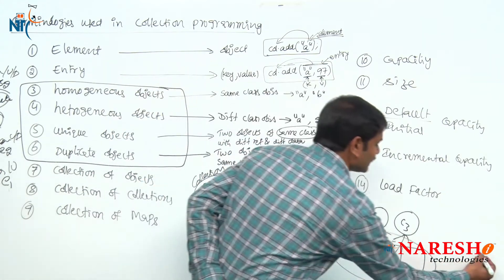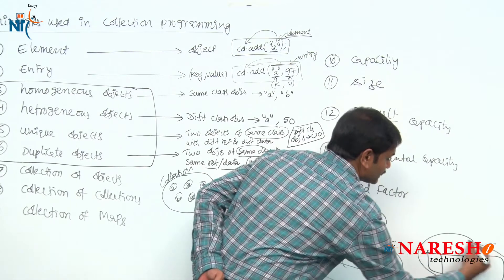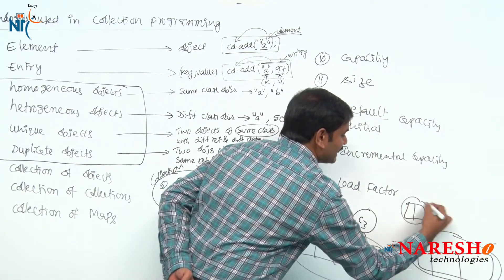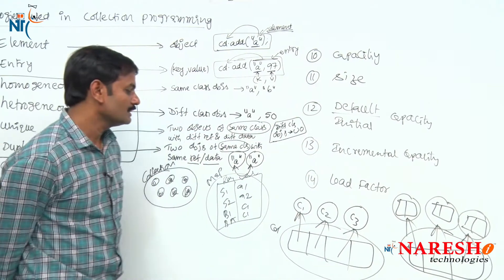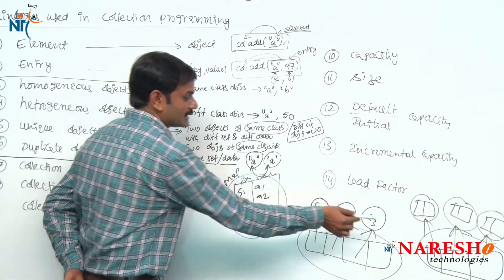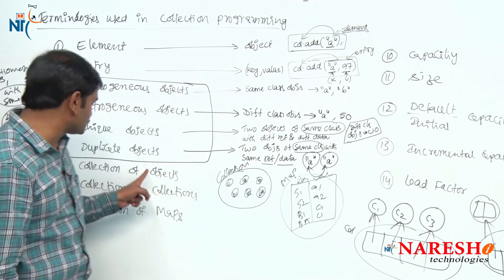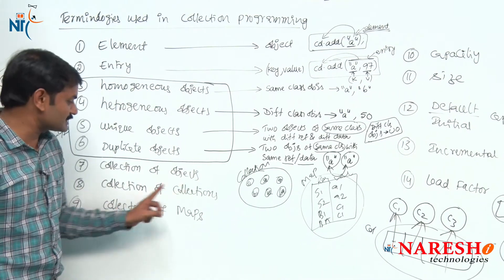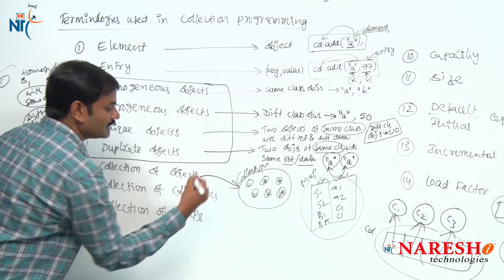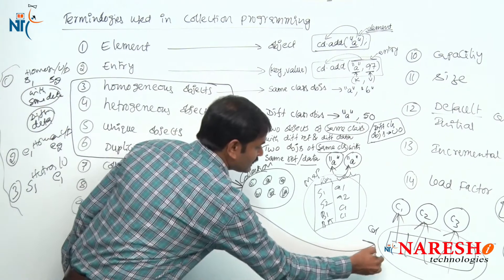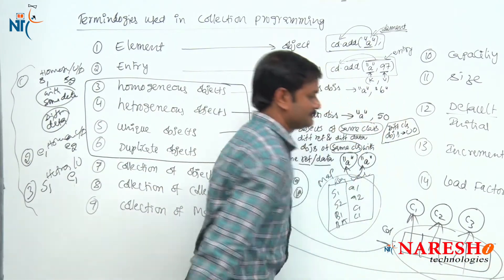What is a collection of maps? I have one collection object that contains multiple map objects — first map, second map, third map. So a collection of collections and collection of maps: a collection of objects contains individual objects, a collection of collections contains collection objects, and a collection of maps contains map objects.